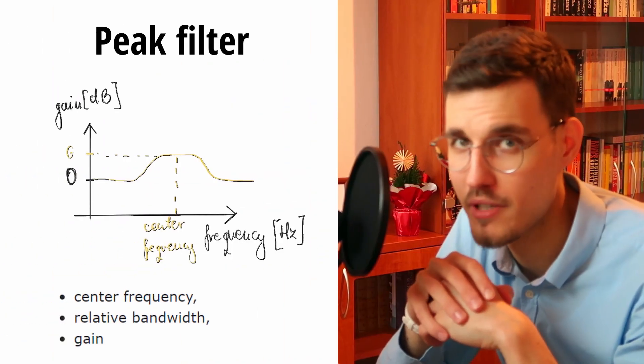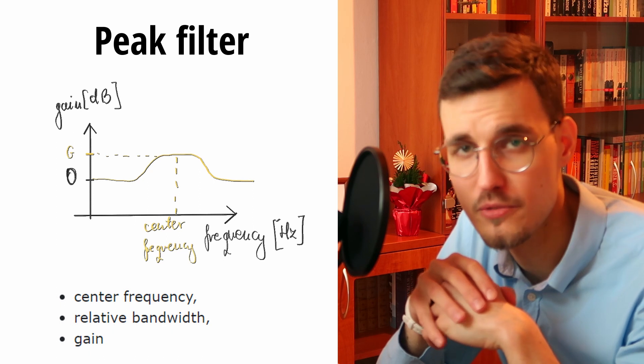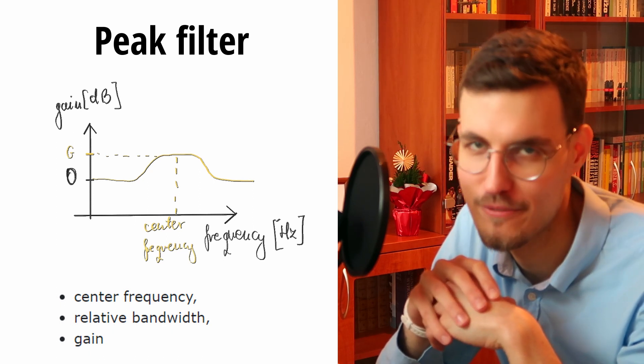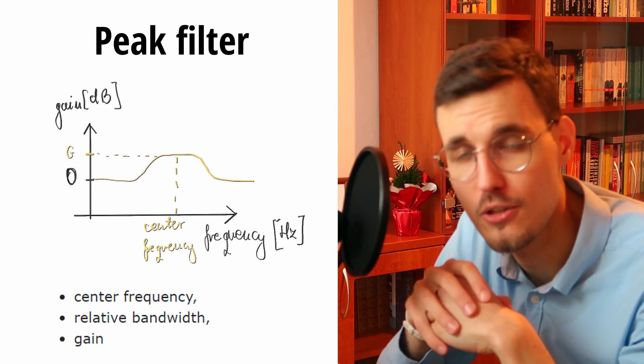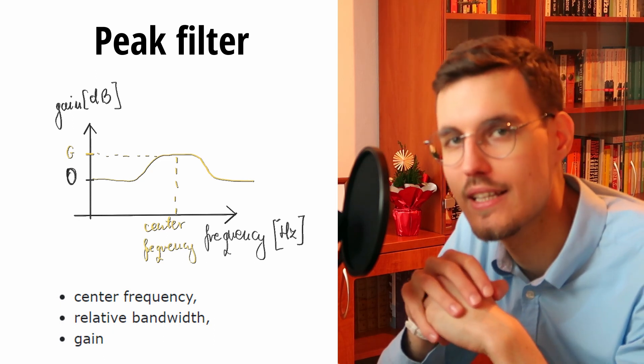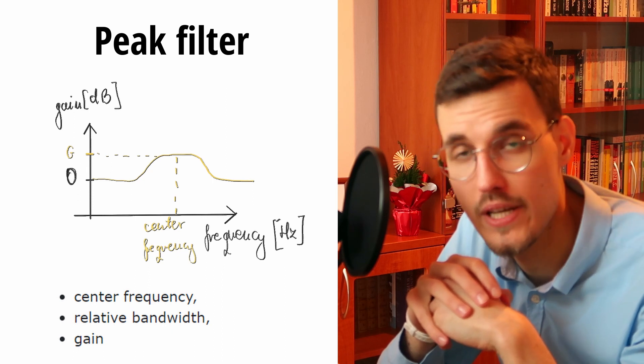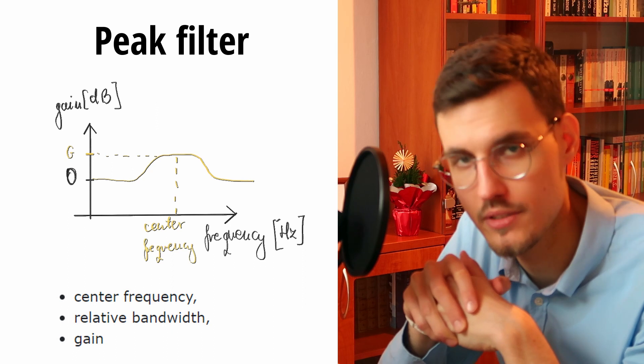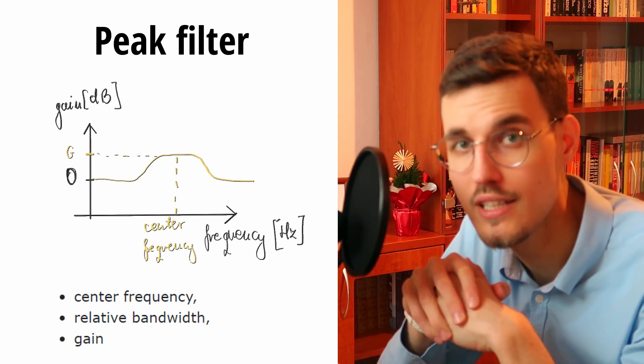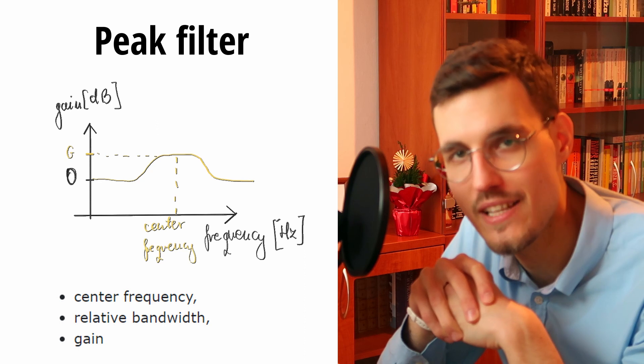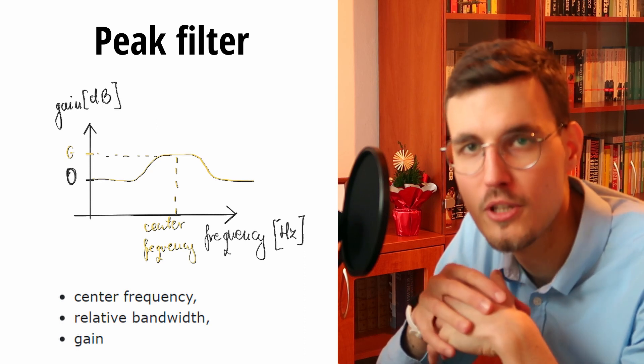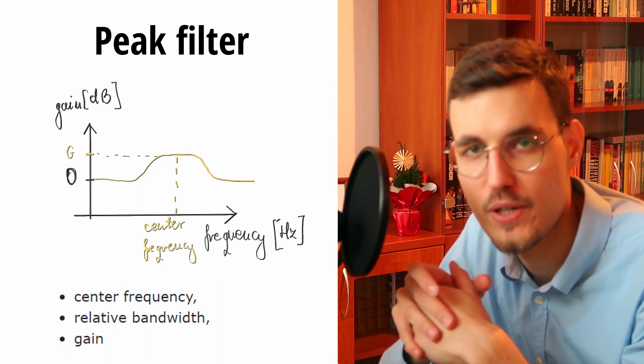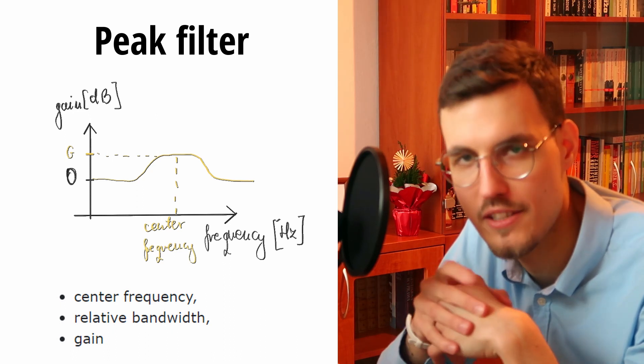The final parametric filter, that is musically useful and my personal favorite, is the peaking filter, also called a peak filter or a band filter. It lets us boost or attenuate a certain frequency range. Its parameters are the center frequency, the gain and the relative bandwidth Q quality factor, so the ratio of the width of the frequency range to the center frequency. Here is how a band filter sounds.